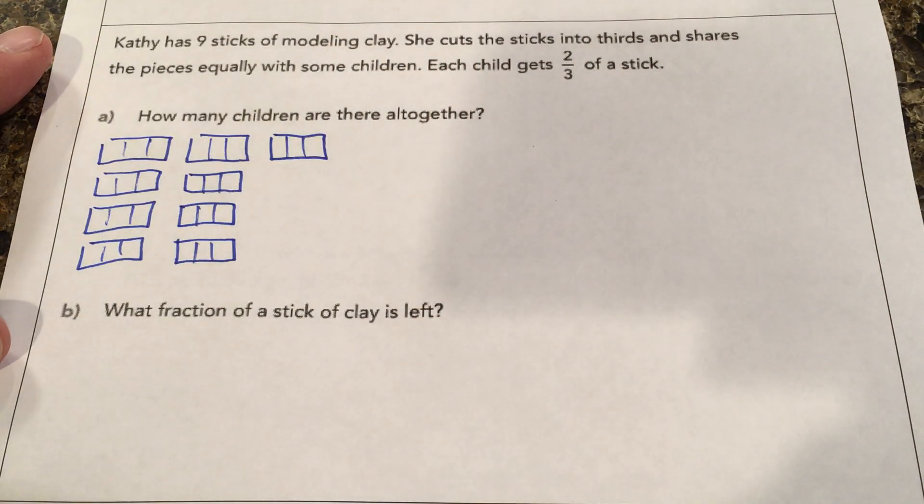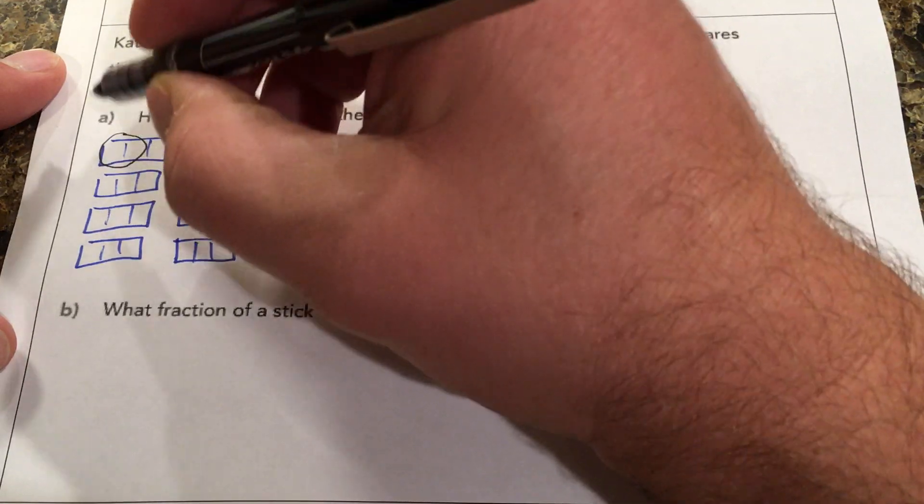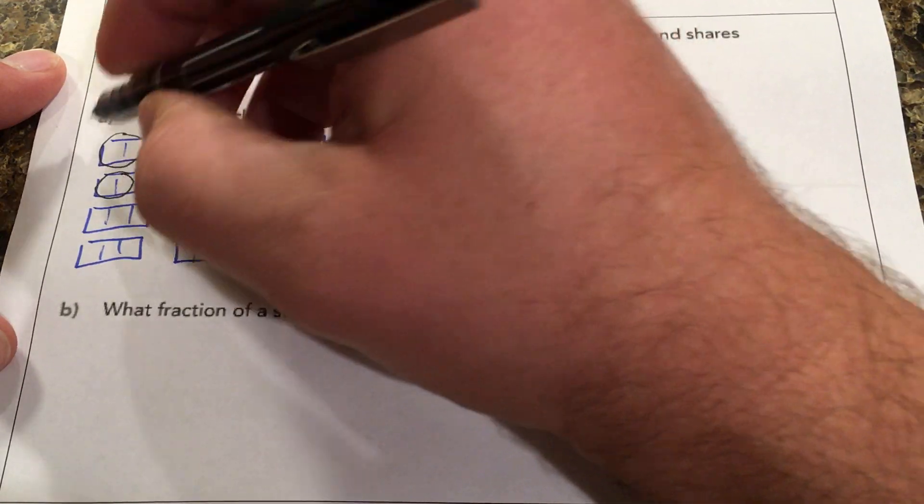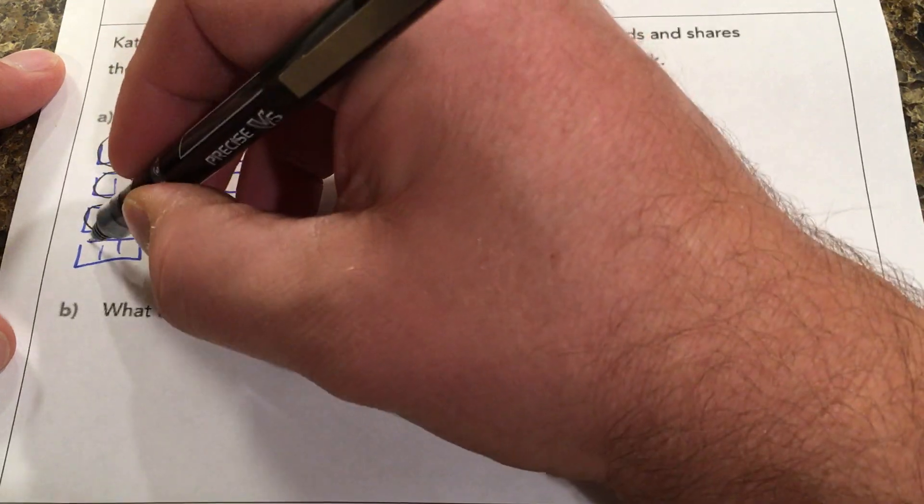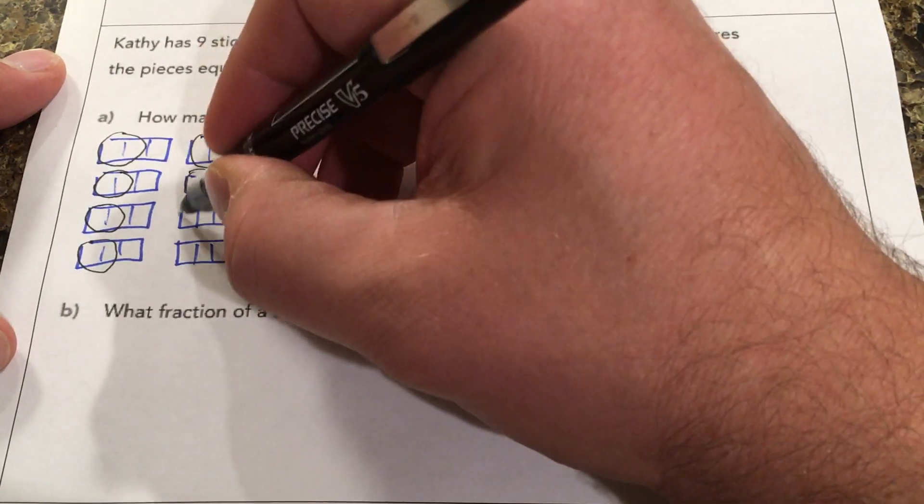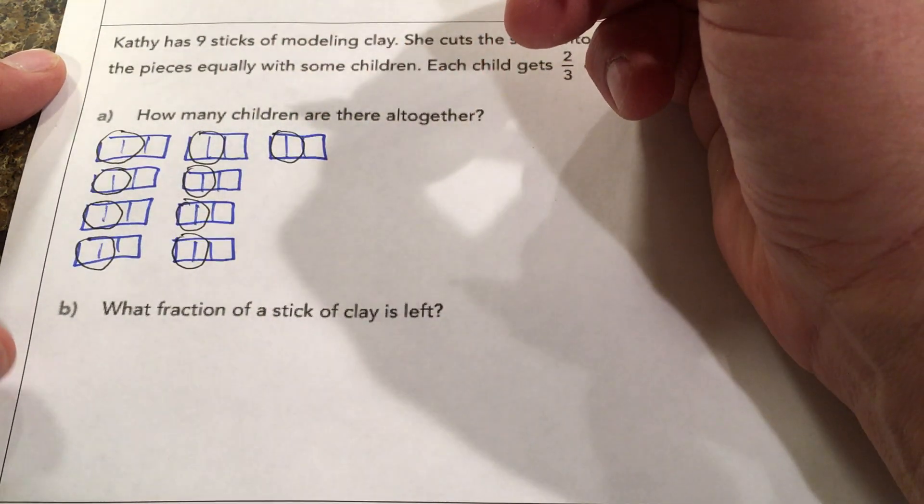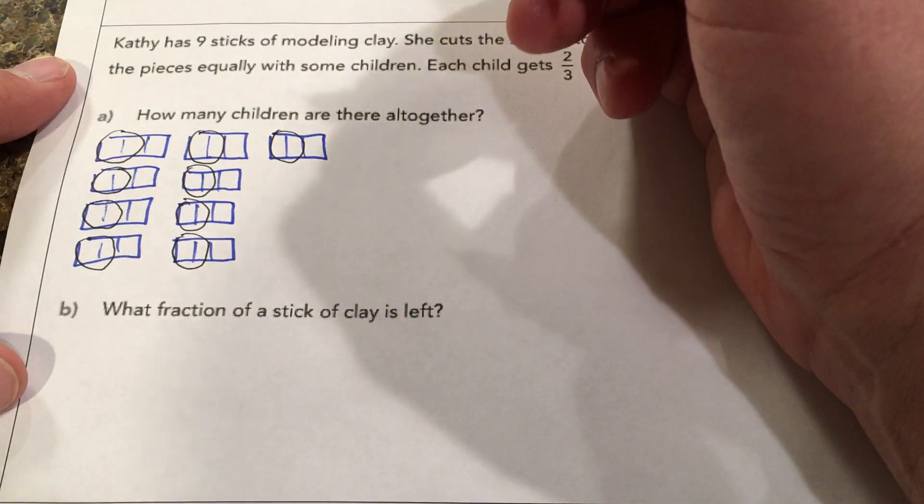And each child gets two-thirds. So this is one, two, three, four, five, six, seven, eight, nine, but then we can start combining those extra thirds.